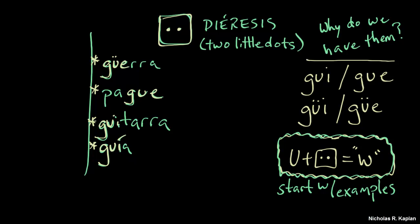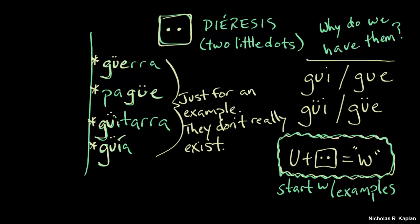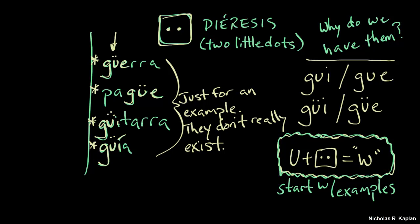So, guerra would change to güerra. Pague would change to pagüe. Pague, just a funny word. Guitarra. Güitarra. Güitarra. Or guia would be güia. Güia. Alright, well that's not very helpful, right? Because those aren't real words.